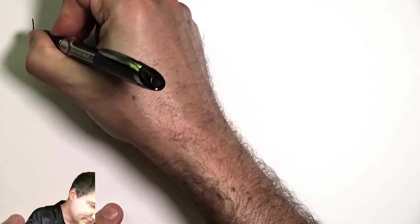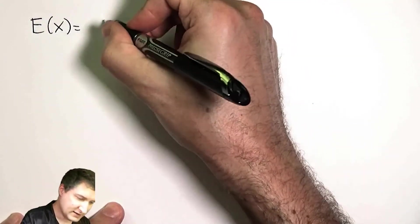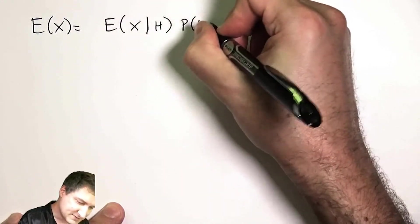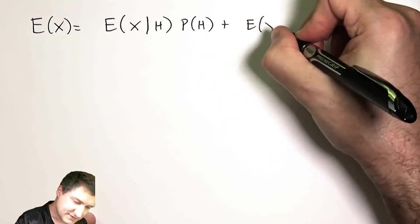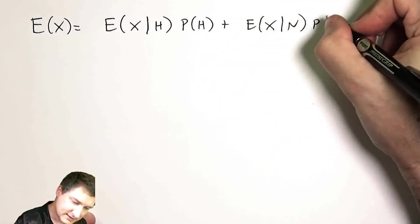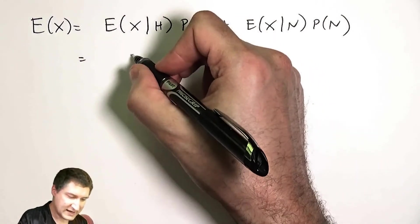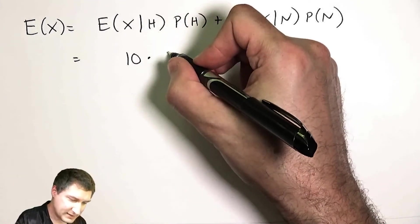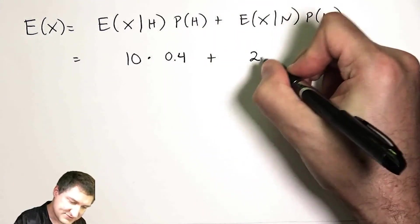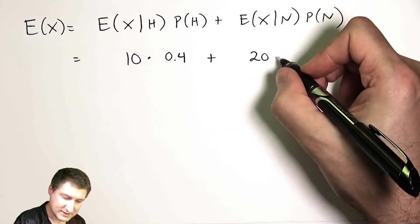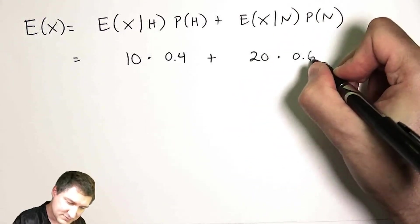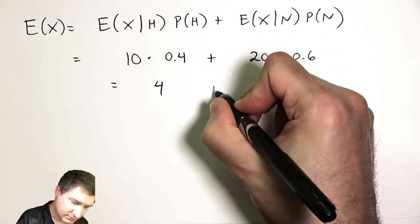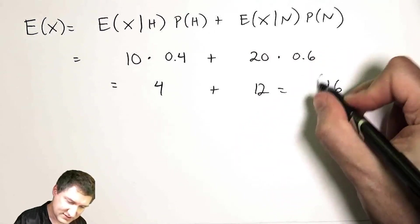But the expected value of X would be really easy to compute. All I have to do is say, what's the expected value of X given H times the probability of being in class H plus the expected value of X given N times that probability. And so here I can say high blood pressure, my mean is 10 times the probability of being in that class is 0.4 plus the mean of the expectancy in the normal case is 20 times 0.6. And so I can add these things up and I can get 4 plus 12 is 16.